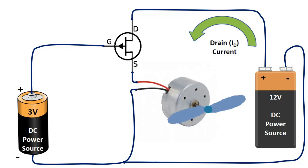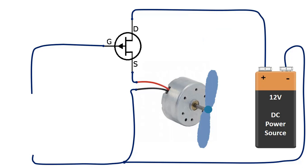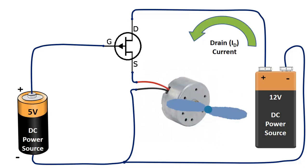We have checked this current with a voltage source. Now let's remove the 3V voltage source and connect 5V voltage source this time. Here we can see that the motor rotates slower. This shows us that the current between drain and source has decreased further.